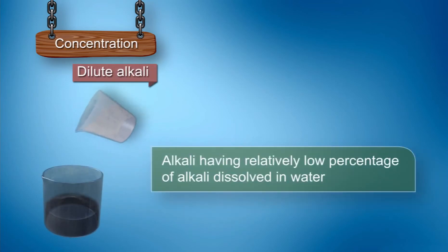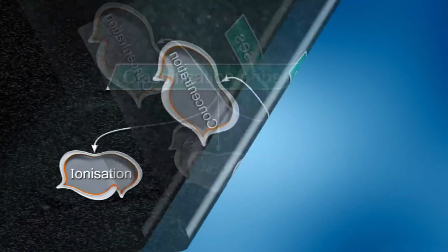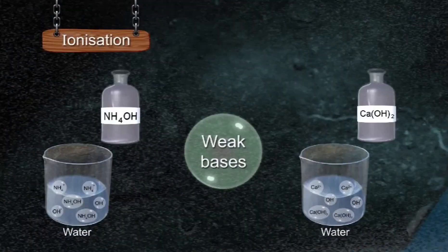If an alkali has relatively low percentage of alkali dissolved in water, then it is called dilute alkali. Have a quick recap on the classification of bases.